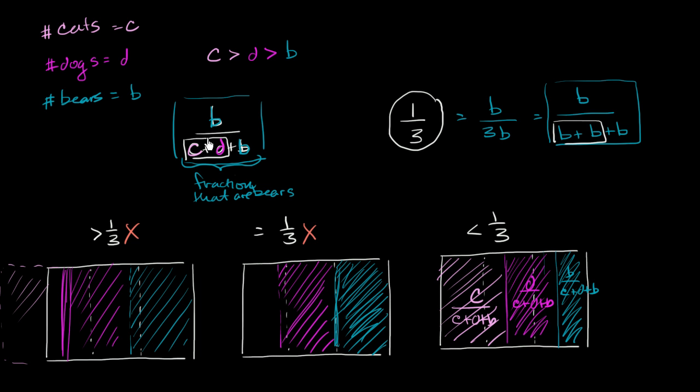So this denominator right over here is greater. So this has a larger denominator. Larger, larger denominator. This right over here has a smaller, smaller denominator.